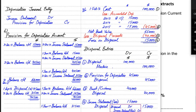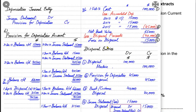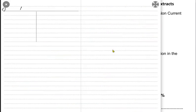So, sometimes the examiner asks us just to calculate gain or loss — in that case we do the working. If the examiner asks us to make disposal entries, we make these four entries. Sometimes the examiner asks us to prepare a disposal account. If you have already learned how to make entries, you just need to place those entries in a T-account.